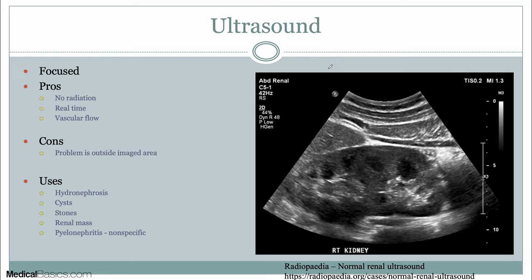When you have an inpatient with an AKI, what do you do? You get an ultrasound. What you're really looking for is whether there are any structural abnormalities causing the AKI — namely hydronephrosis. Is there some obstructing mass or hydronephrosis leading to a new AKI that can be fixed by IR, for example? Other things include cysts, stones, and renal masses, which can also be evaluated or even picked up on ultrasound.